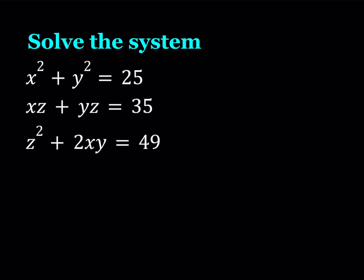Hello everyone. In this video we're going to be solving a system of equations. We have a polynomial system: x squared plus y squared equals 25, xz plus yz equals 35, and z squared plus 2xy equals 49.